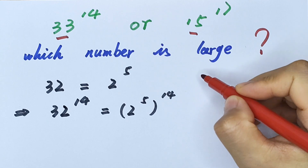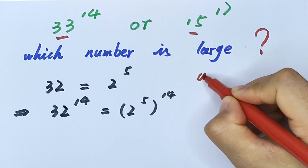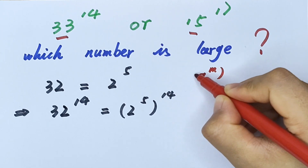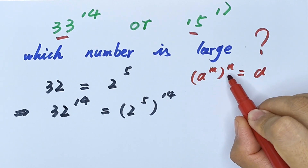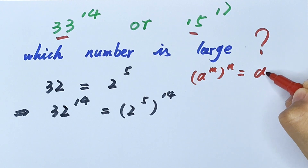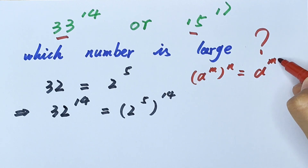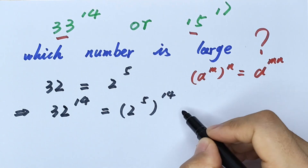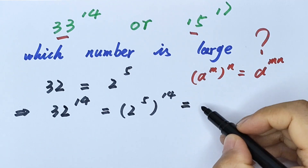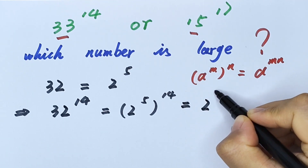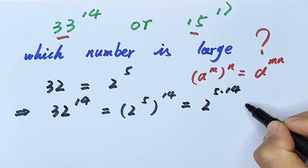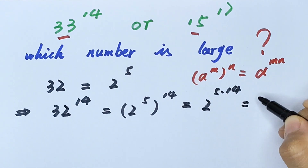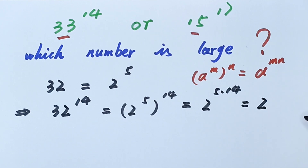Now we apply the formula: a to the power of m, in brackets, to the power of n equals a to the power of m times n — we multiply the powers. So this equals 2 to the power of 5 times 14, which is 2 to the power of 70.